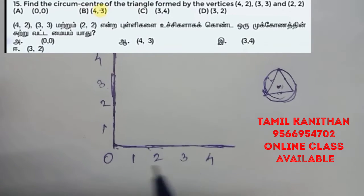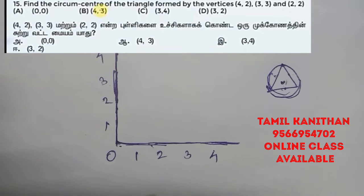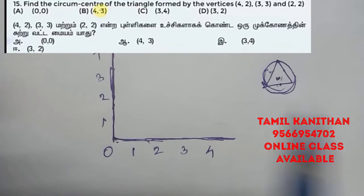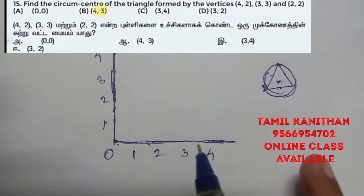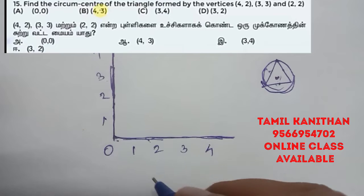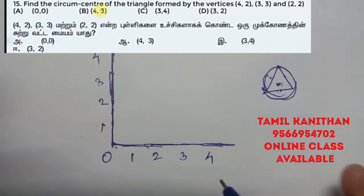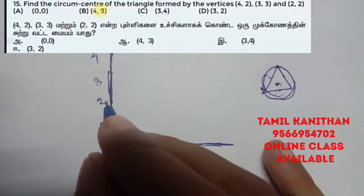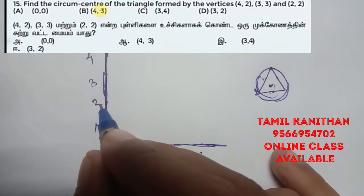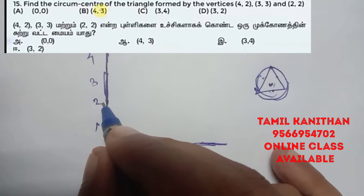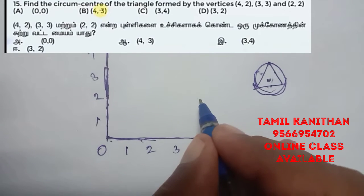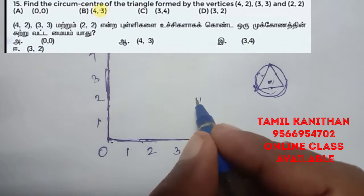Now we're going to show you a point: 1, 2, 3, 4. We're going to show you a point. First, 4, 2. Then, X axis is equal to 2. Then, X axis is equal to 4. There is a point. So if we show you a point here, there is a point here.